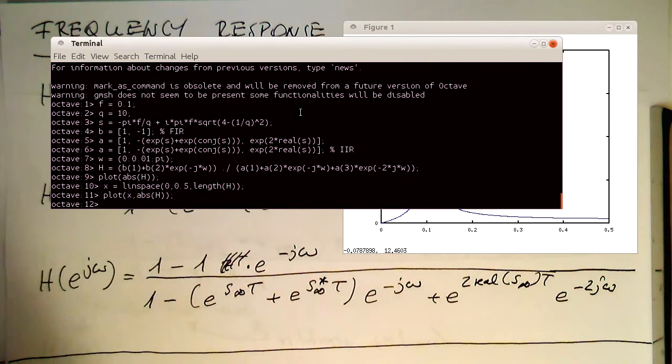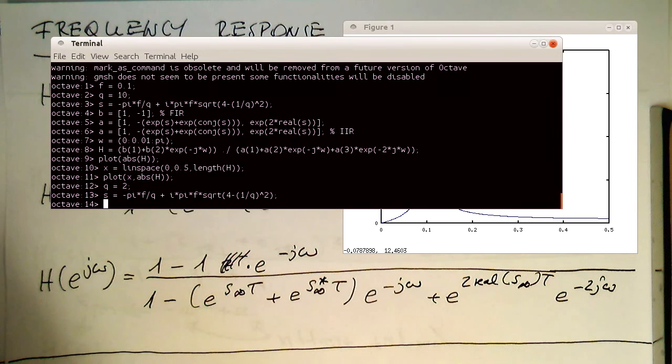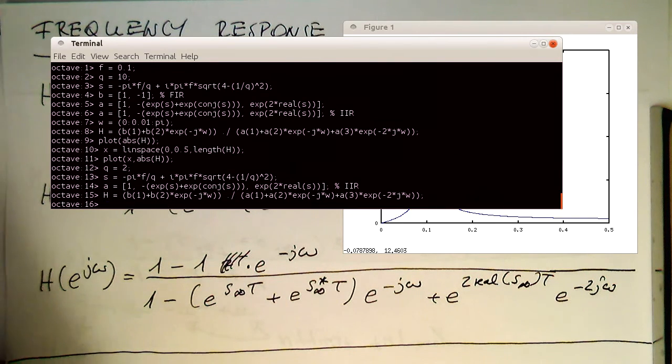We could now just play a bit with that and set, for example, the Q factor to 2. So we have a very bad Q factor. So for that, we need to recalculate our pole. And for that, we need to recalculate our IIR coefficients, because it goes in there. And then we recalculate our frequency response H, and have a look what the difference is.